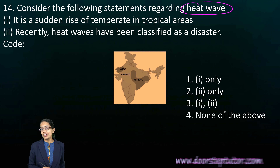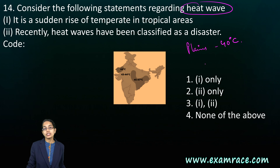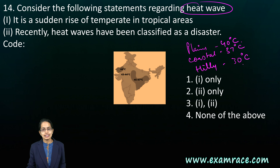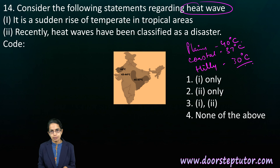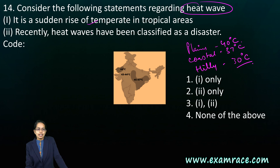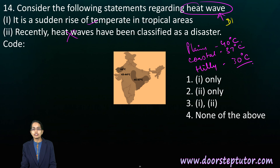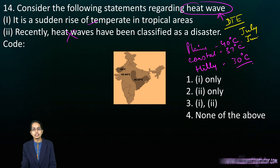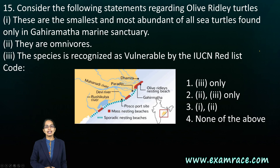Heat wave is a very interesting concept whose definition varies by region. For plains, 40 degrees Celsius and above is considered a heat wave; for coastal areas it is around 37 degrees Celsius; for hilly areas the categorization is 30 degrees Celsius. If this occurs at more than two stations in a meteorological sub-division for two consecutive days, it is classified as a heat wave. It is a sudden rise of temperature in tropical areas, but so far heat waves have not been classified as a disaster.